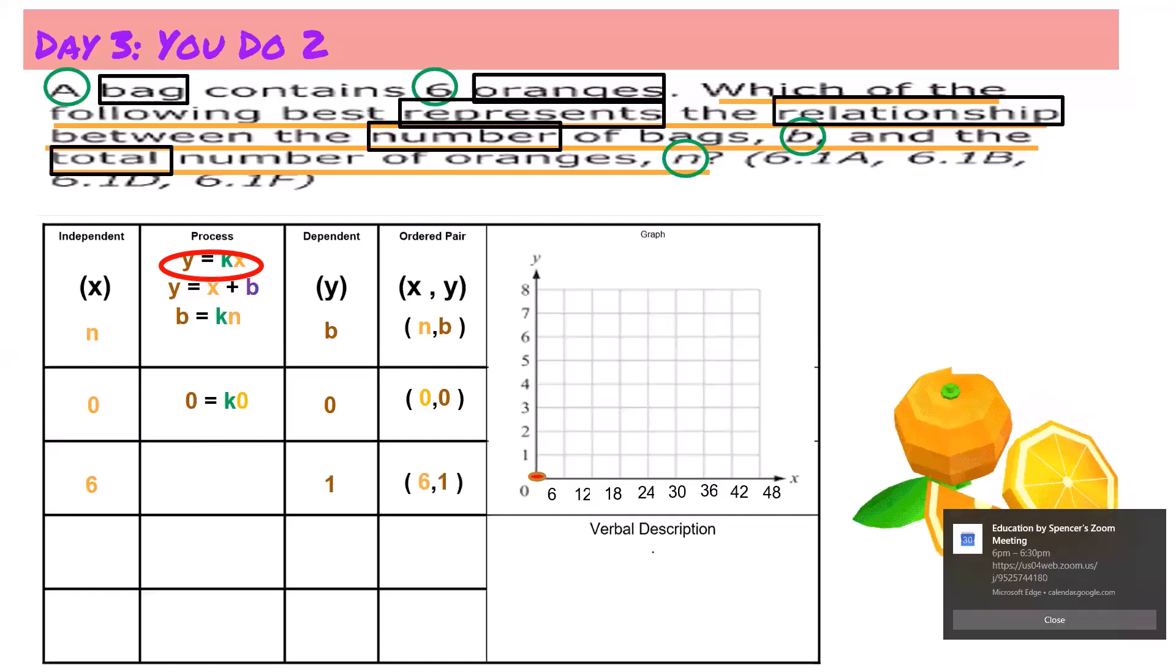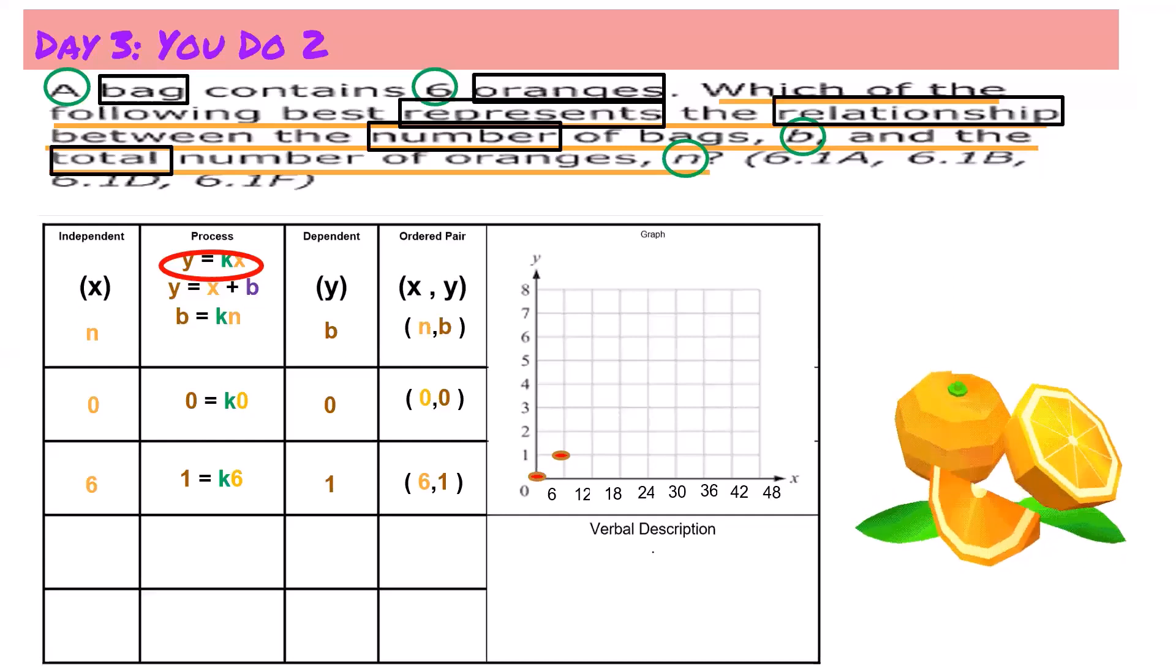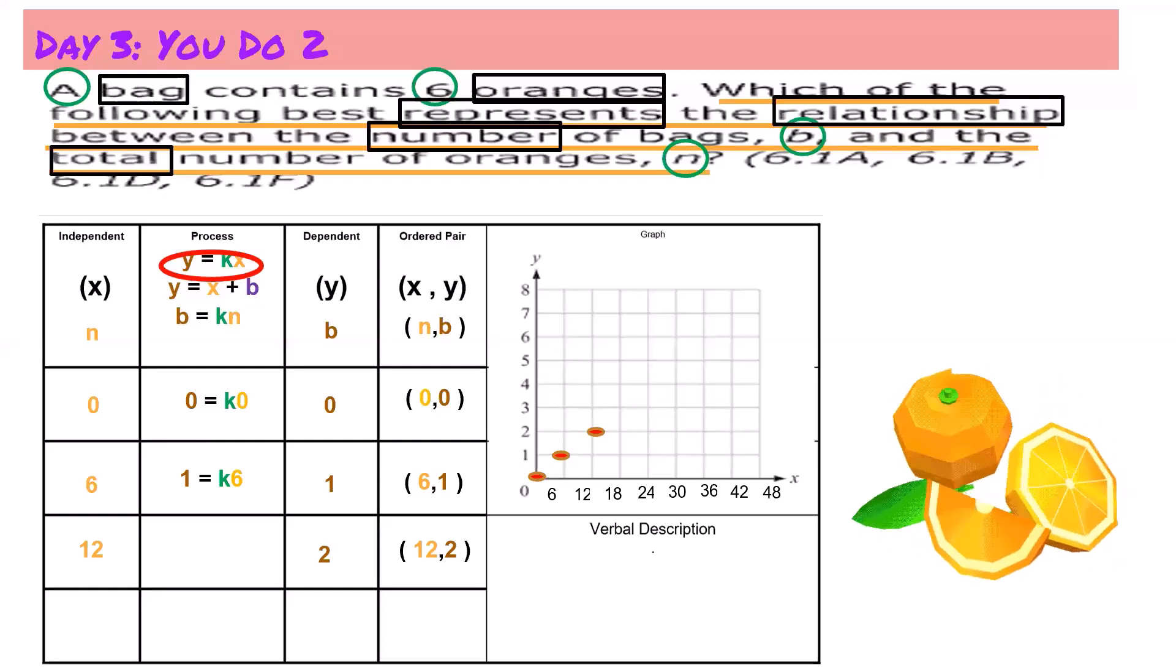My ordered pair would be six and one, and that means on my graph I would go over six and up one. When I write my equation it would be one equals k times six. Next, what if I had 12 oranges? Then I would need two bags. And my ordered pair would be 12 and two. This means on my graph I would go over 12 spaces and up two.